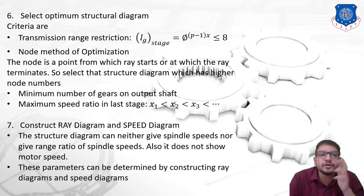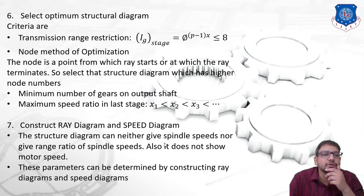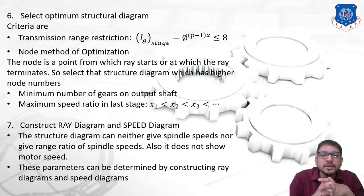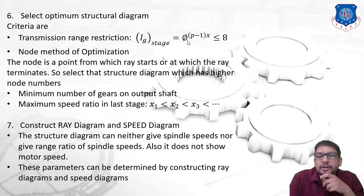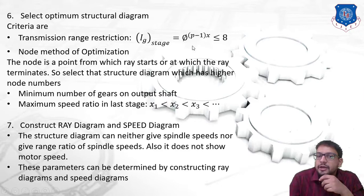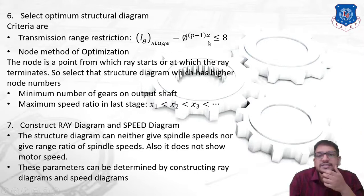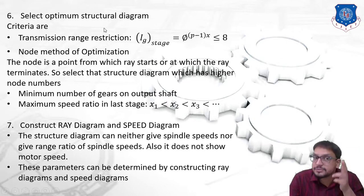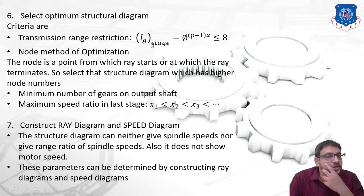The next step in the design procedure is to select the optimum structural diagram. The first criteria is the transmission range restriction, using the formula: I of stage equals phi raised to (p minus 1) times x, where phi is the geometric progression ratio, p represents speed steps in the stage, and x is the distance separating two adjacent speed steps. This value should always be less than 8 to obtain an optimal structural diagram.